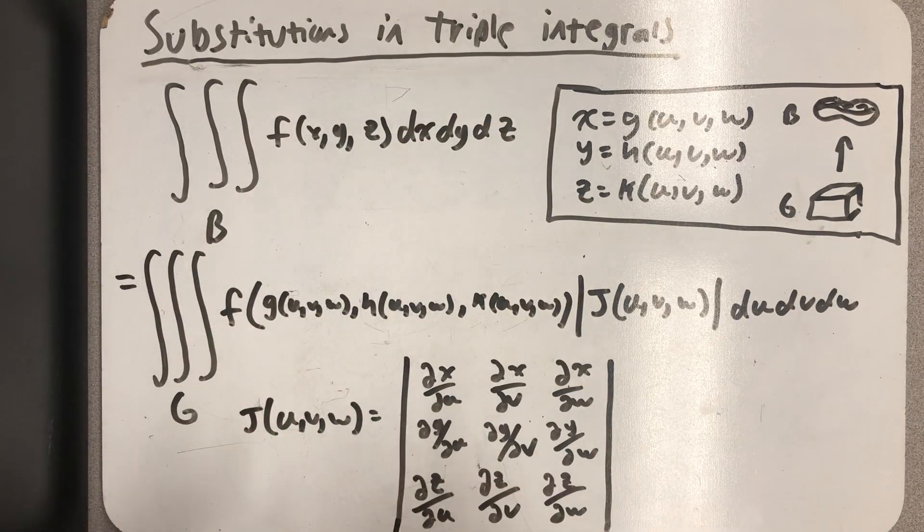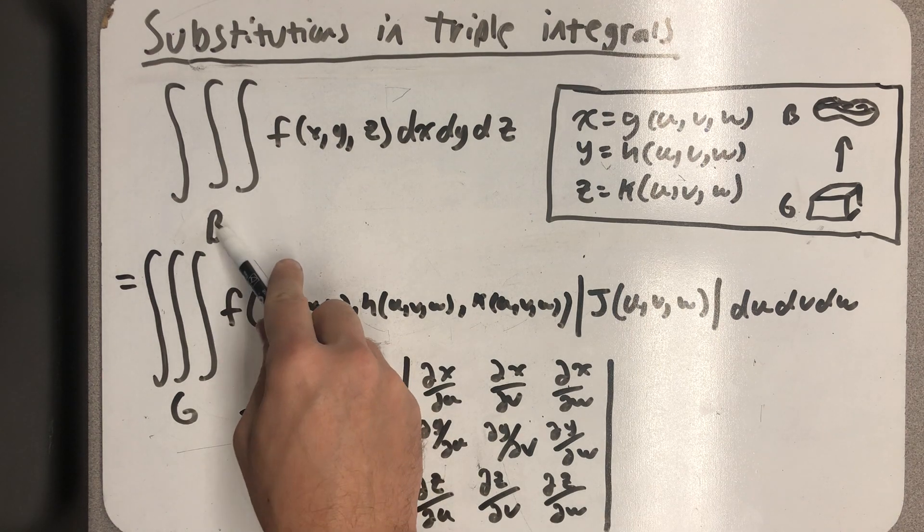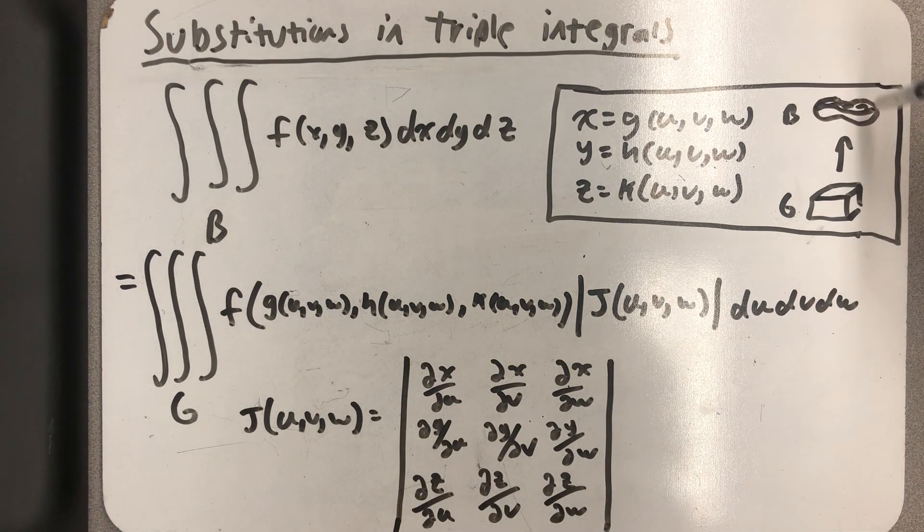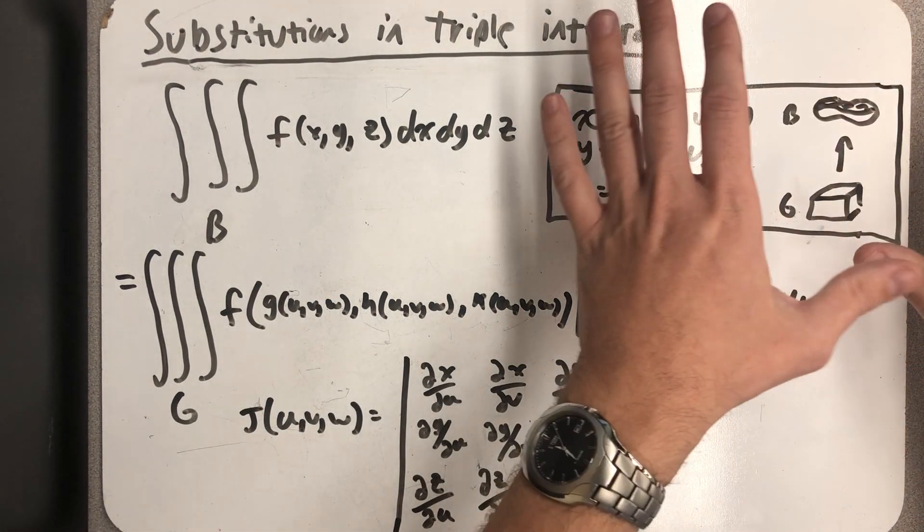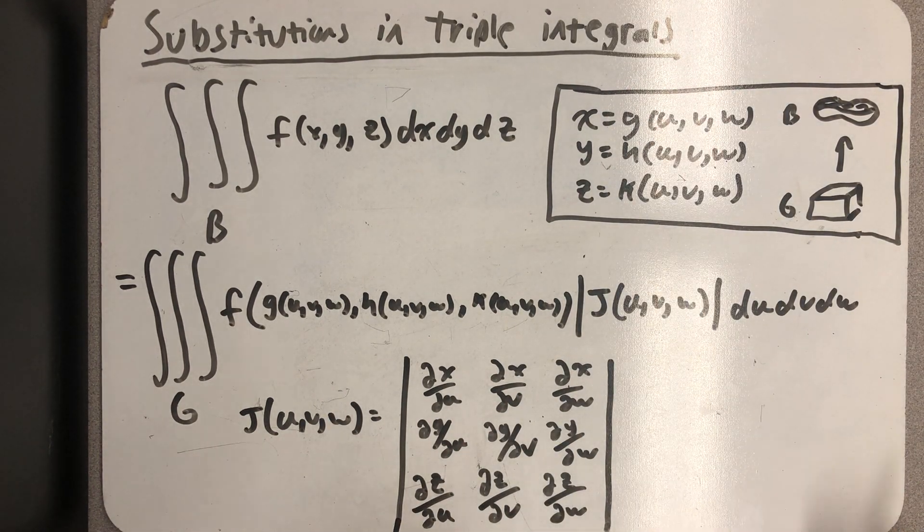So let's say we had the triple integral of f of x over this region B in space. I've drawn a little region B over here, and I haven't indicated any axes, but this is what I'm considering B to be. We want to do a substitution.